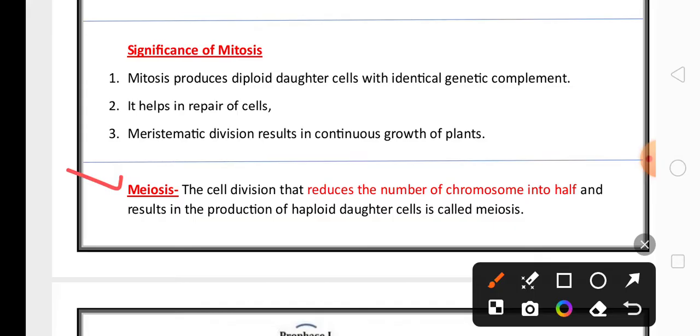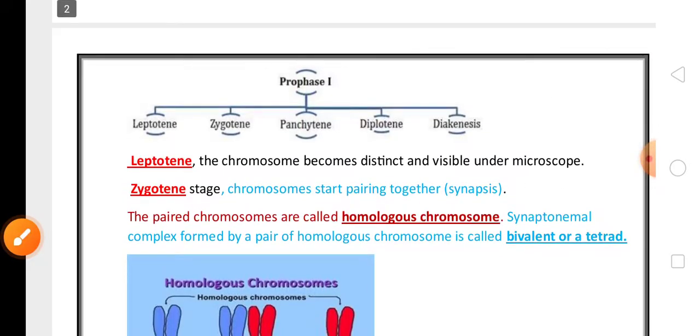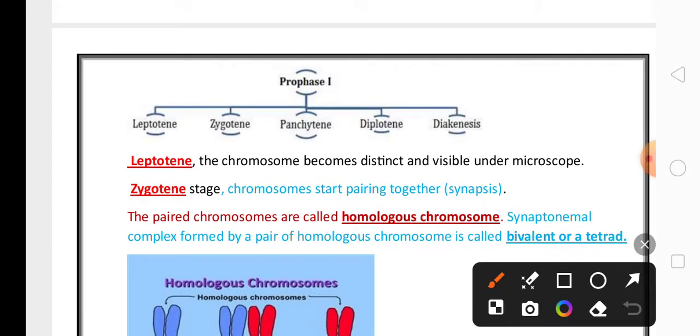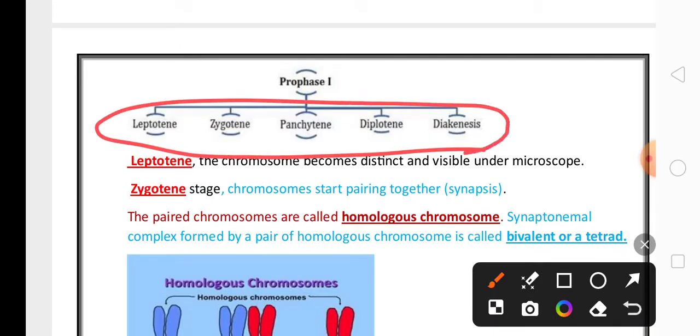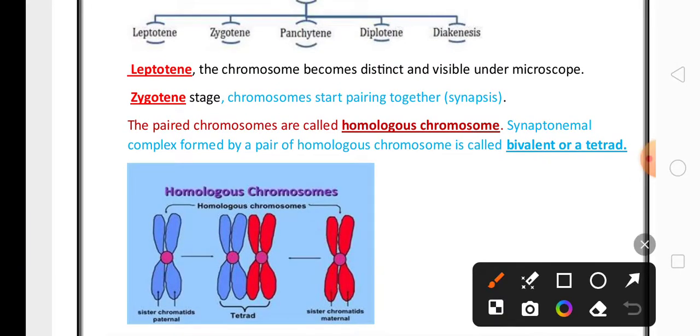Meiosis is the reductional division where the chromosome number is reduced to half, and this happens in reproductive cells. In meiosis I, prophase I has five stages: leptotene, zygotene, pachytene, diplotene, and diakinesis. Each phase has some characteristic features.